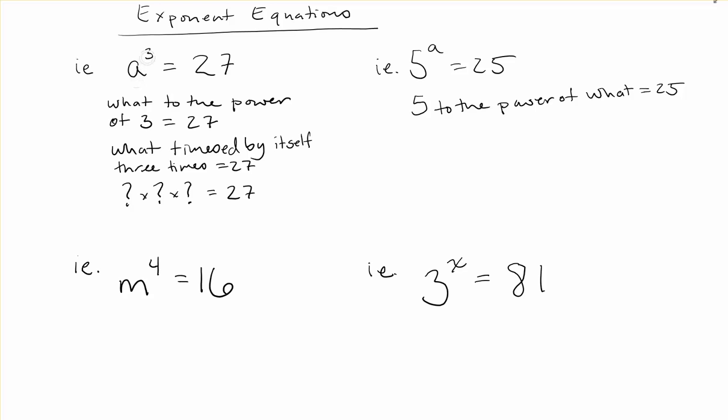The first example is a to the power of 3 is equal to 27. When solving these problems, it's really helpful to think through it in words: what to the power of 3 equals 27? Since a is the unknown, we're asking: what to the power of 3 would equal 27? Remember that power of 3 means multiplied by itself 3 times, so what times itself times itself again equals 27?